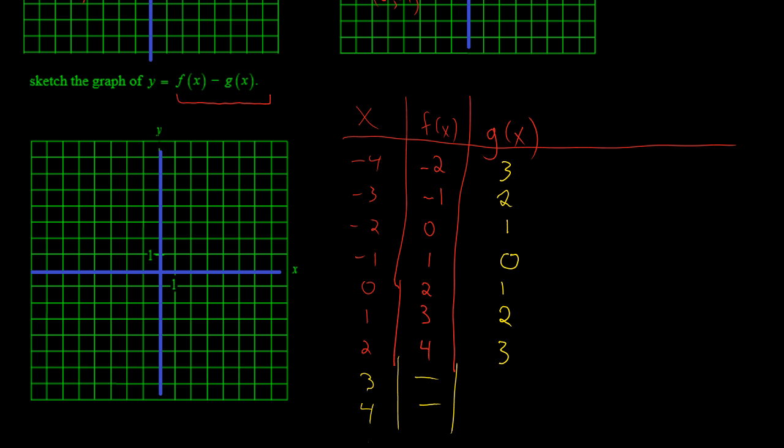Your other graph doesn't have anything. This graph at 3 goes up to 4. And at 4, it goes up to 5.